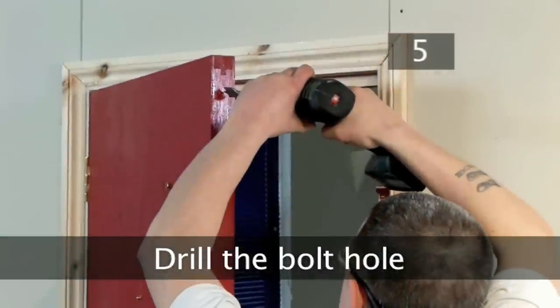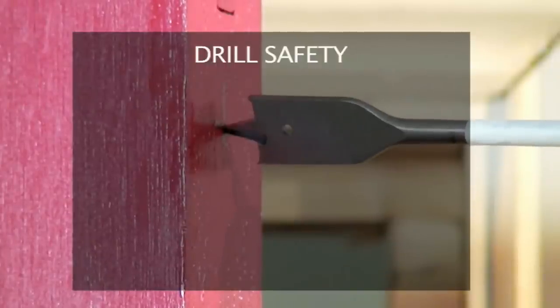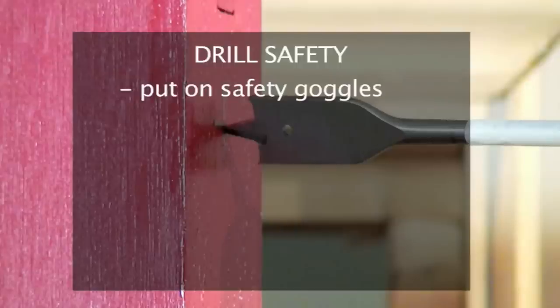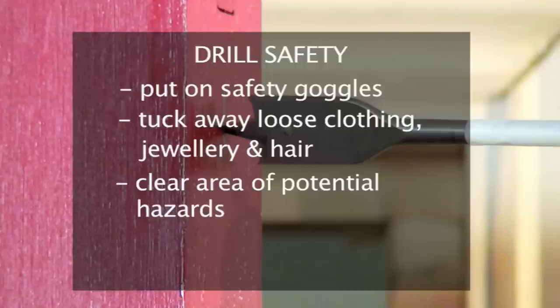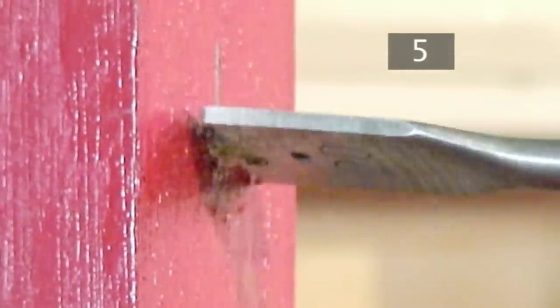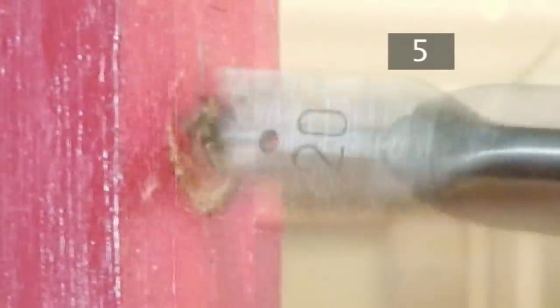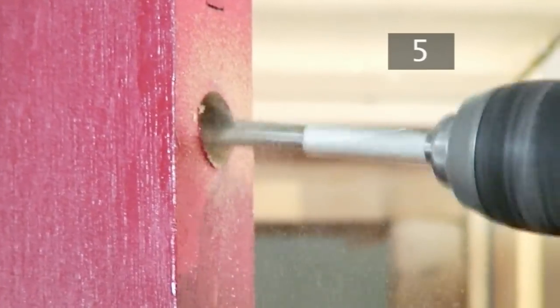Step 5. Drill the bolt hole. Before you begin, remember drill safety. Put on your goggles. Make sure all loose items of clothing and hair are tucked away. Clear the area of any potential hazards and find a steady standing position. Hold the bit over your pencil marker and drill firmly into the door. Stop when you have gone as far as the masking tape. Run the drill back and forth a couple of times to make sure that the hole is even.